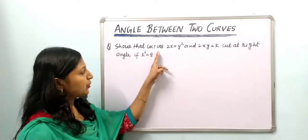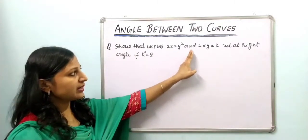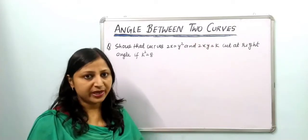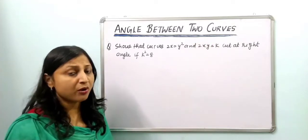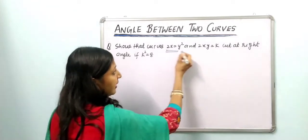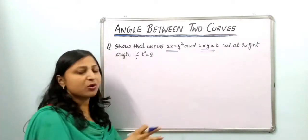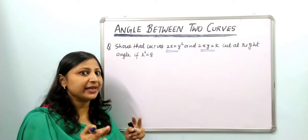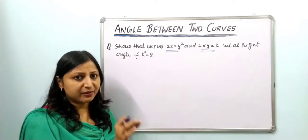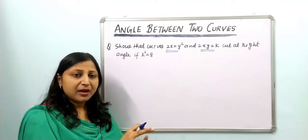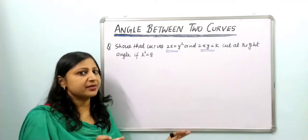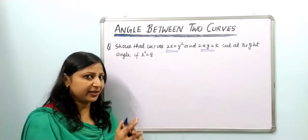The next question is: show that the curves 2x = y² and 2xy = k cut at right angles if k² = 8. In this question, the condition is already given that the two curves cut at right angle, meaning the angle of intersection between them is 90°.